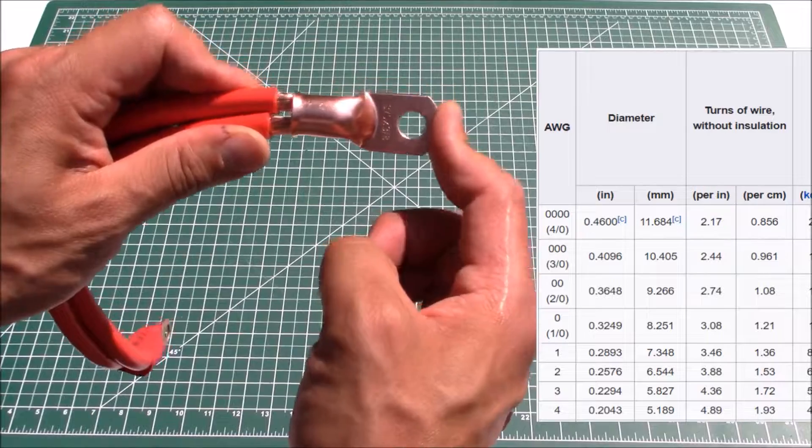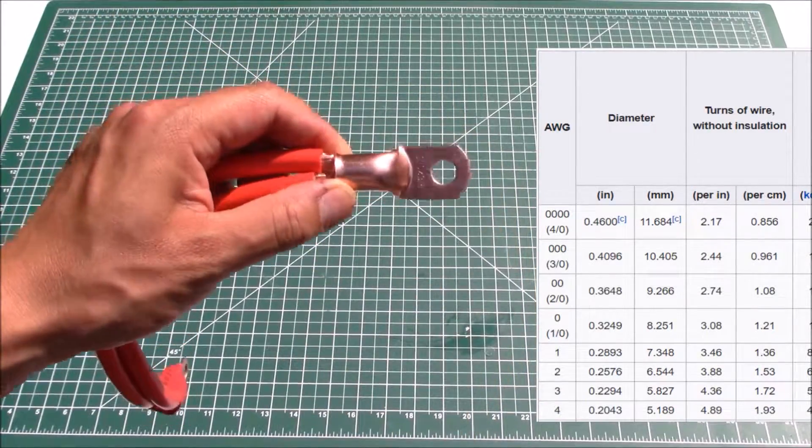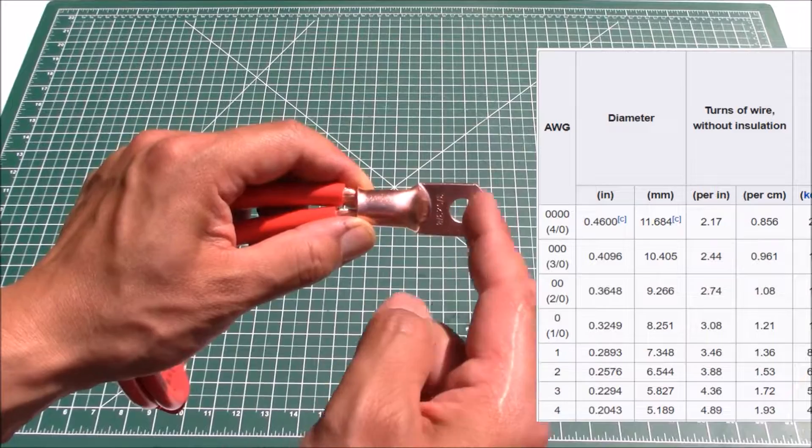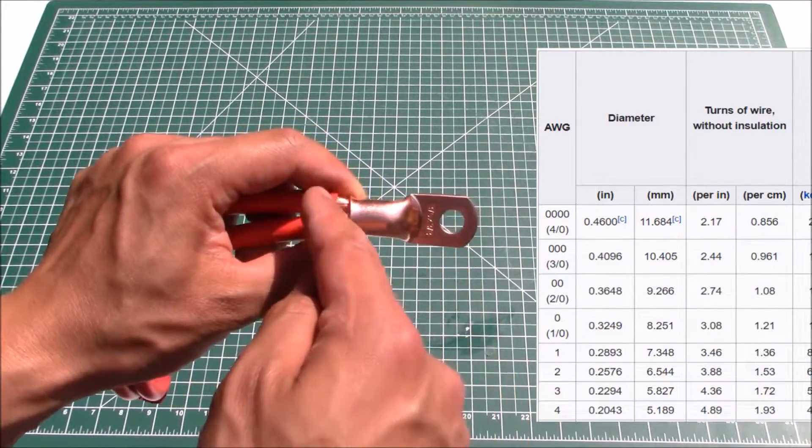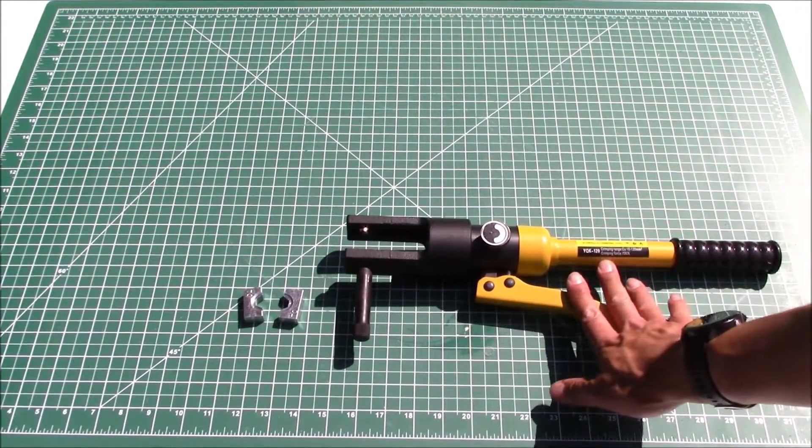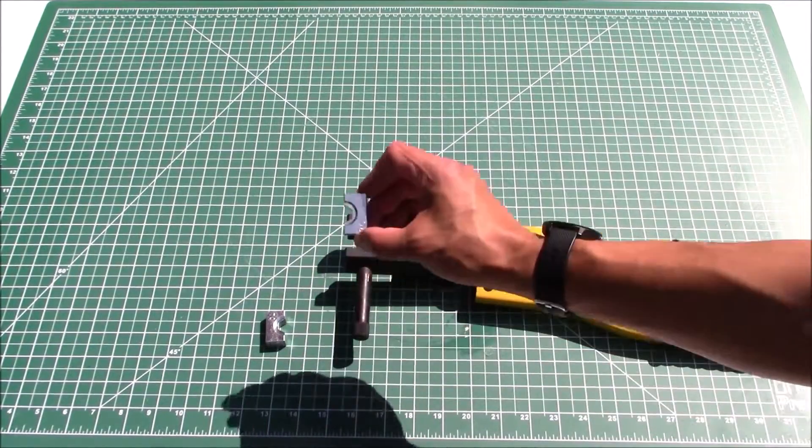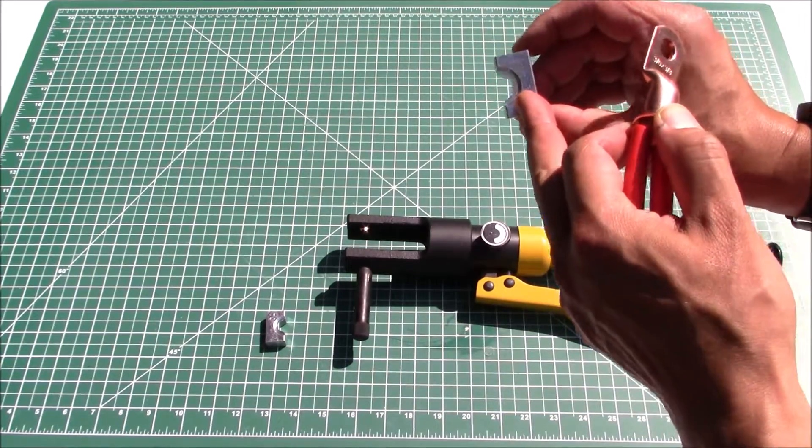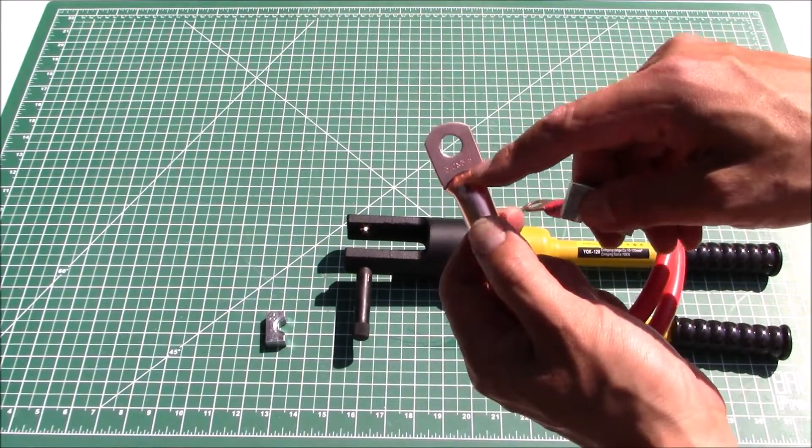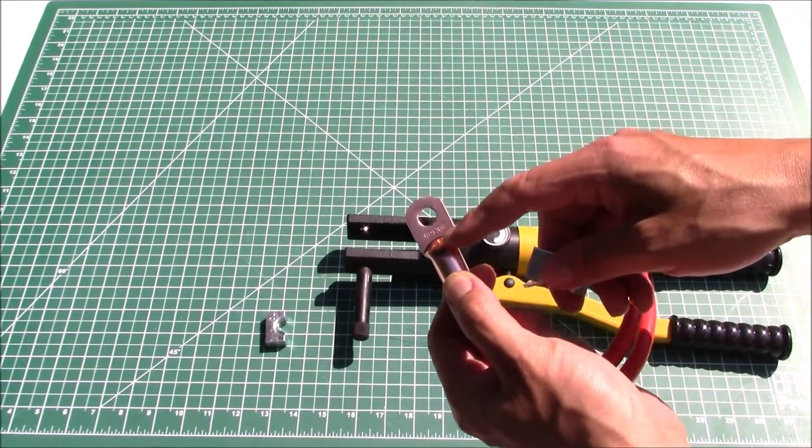Now that we've got the wire all set, let's go ahead and get the crimping tool so we can actually first crimp this lug or this ring terminal onto the wire. I've got the crimping tool here and I've got the appropriate size dies. These crimping dies - you're going to want to make sure that the size of the crimping die matches the size of the lug or the terminal that you're trying to match.